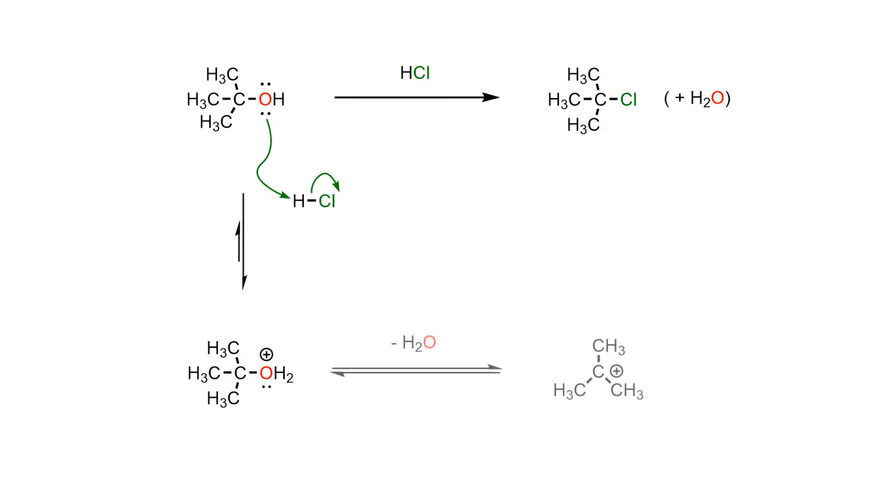The second step is rate determining. When the leaving group breaks away from the substrate, a tertiary carbocation is formed which is stabilized by the nine adjacent beta bonds through hyperconjugation.